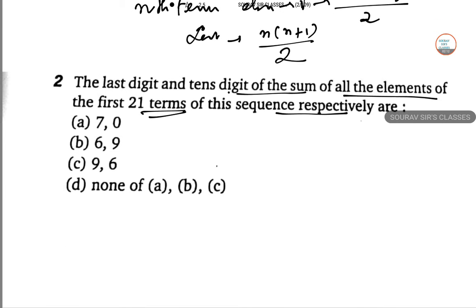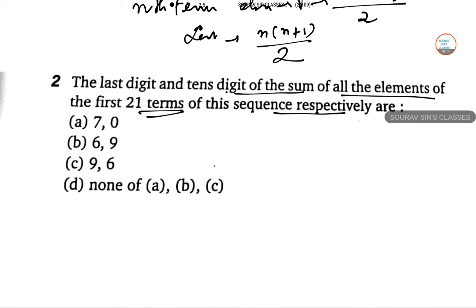So the last element of the 21st term will be 21 into 22 by 2. So 22 into 11 that is 241, sorry 231.